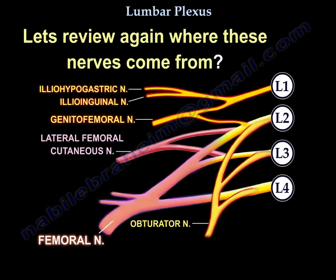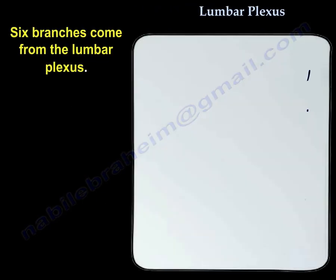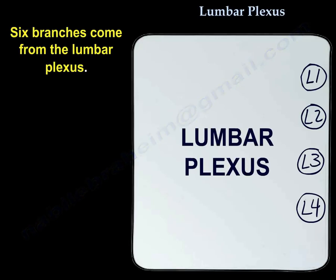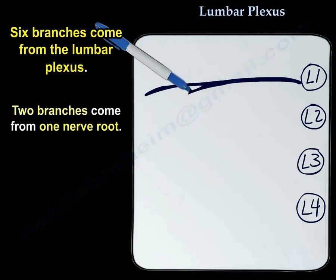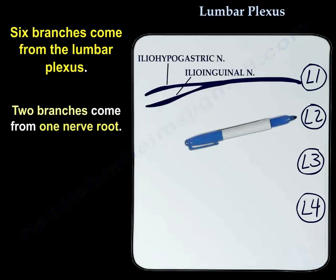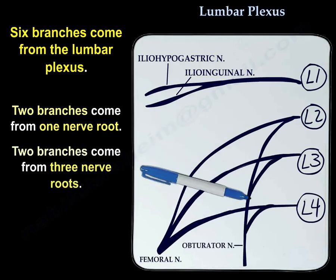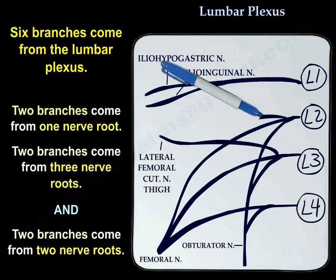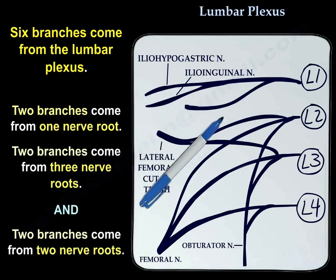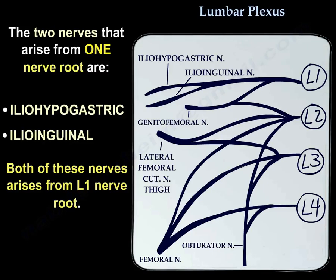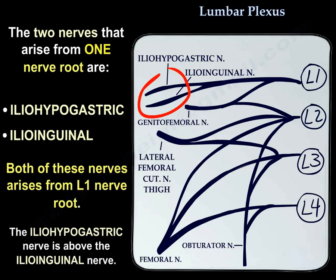Let's review where these nerves come from. Six branches come from the lumbar plexus: two branches from one nerve root, two from two nerve roots, and two from three nerve roots. The two nerves arising from one nerve root are the iliohypogastric and ilioinguinal nerves — both arise from L1, with the iliohypogastric being higher than the ilioinguinal.